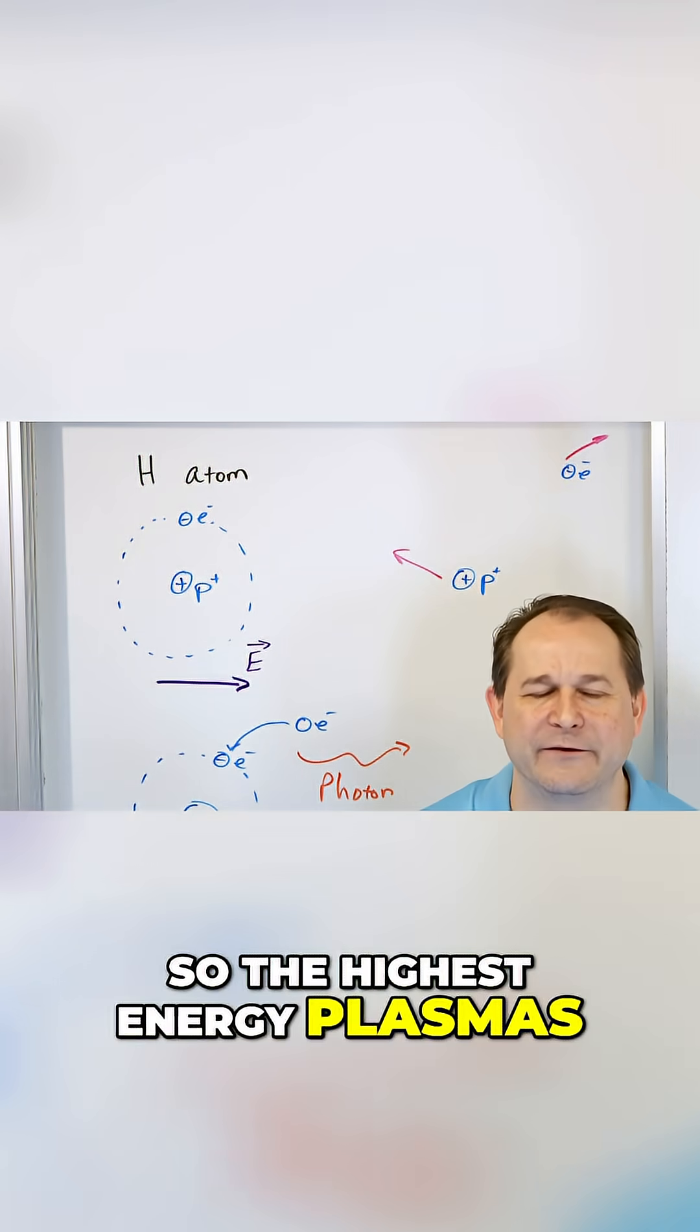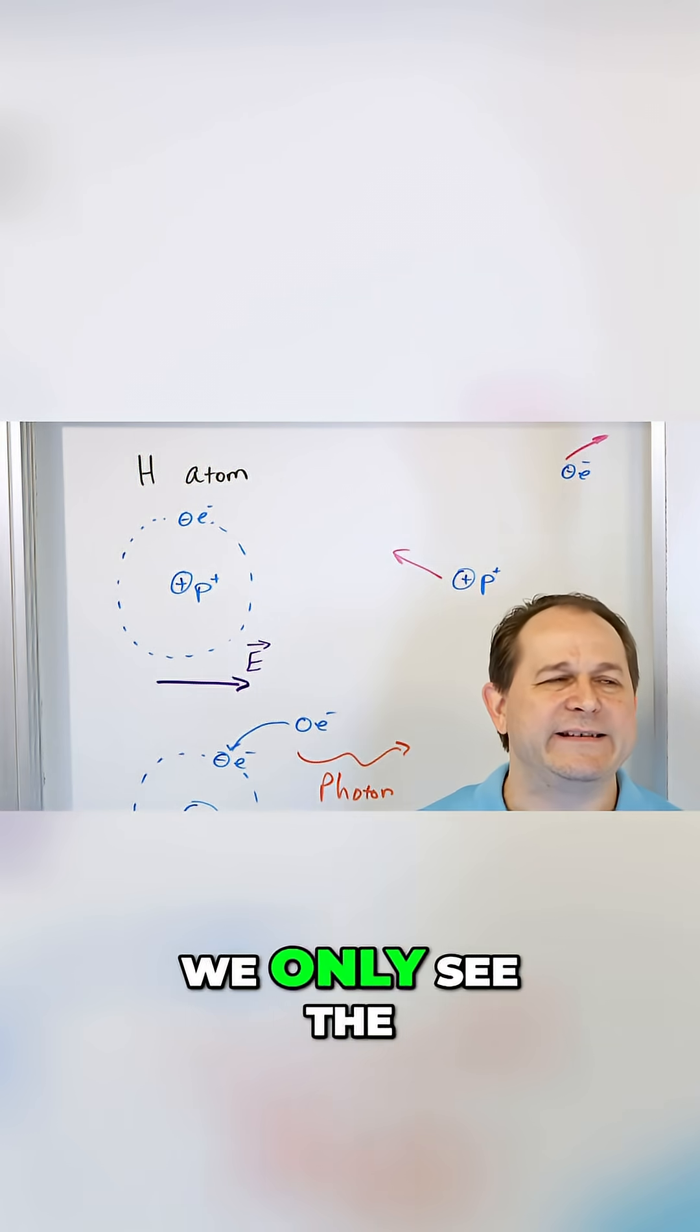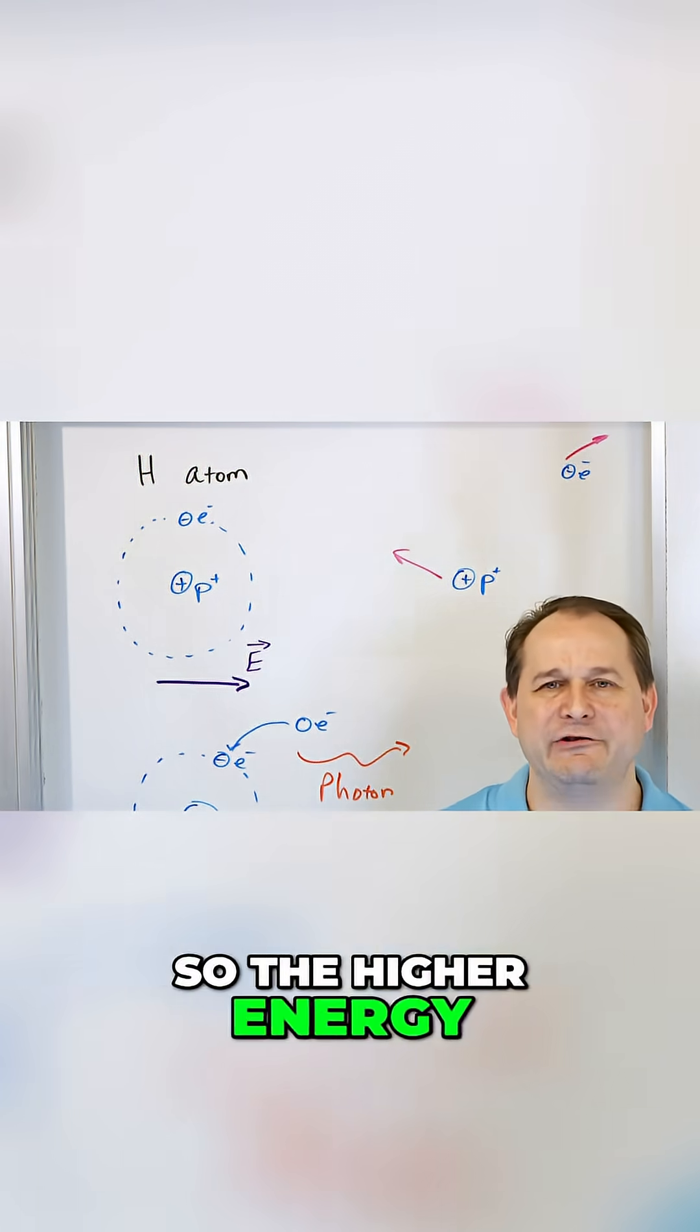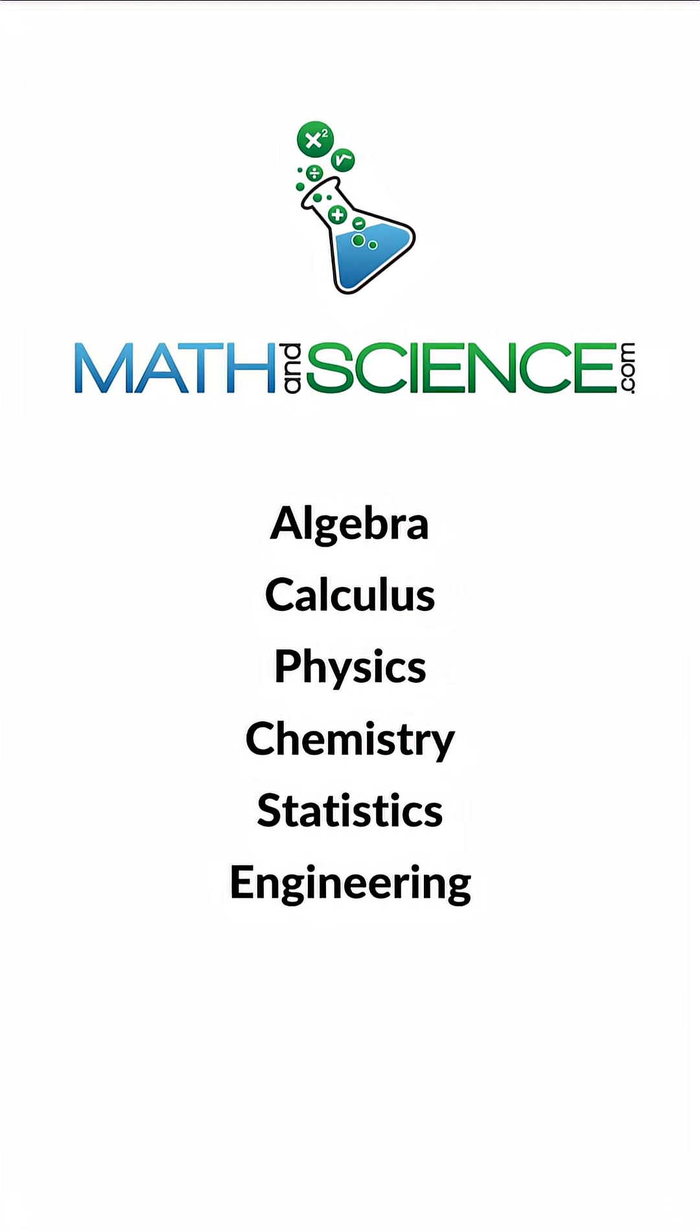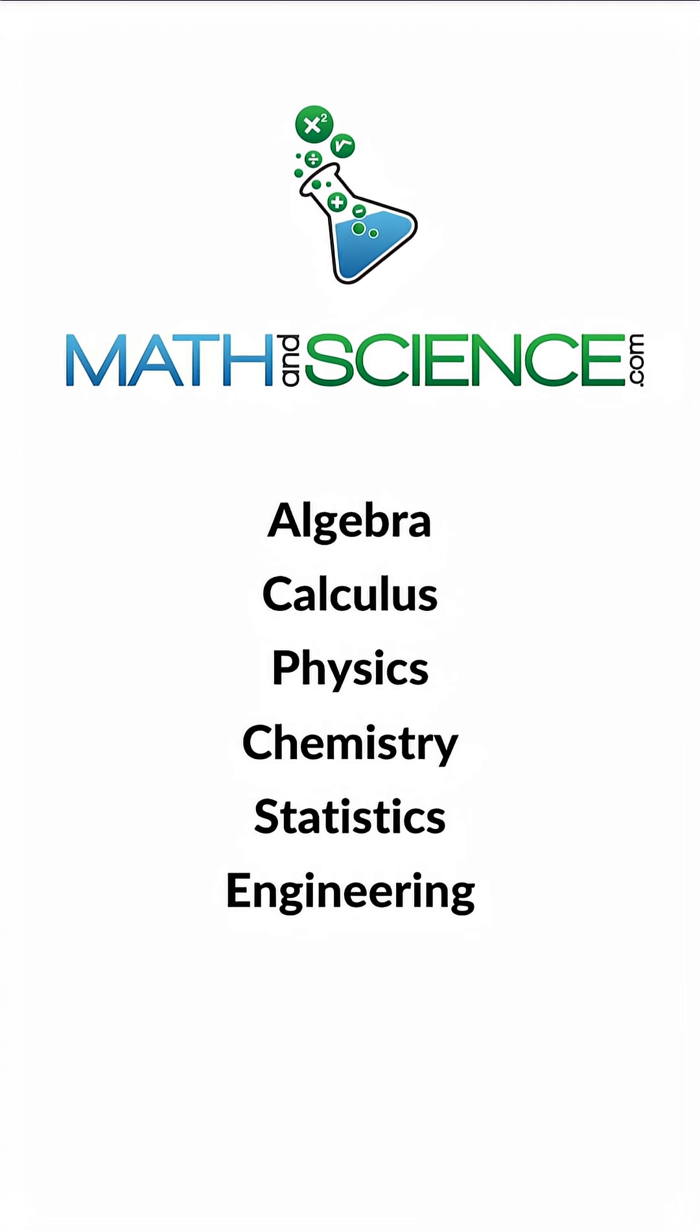So the highest energy plasmas, we don't actually see them. We only see the after effects of the recombination. So the higher energy plasma is completely transparent.